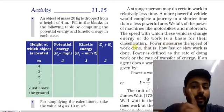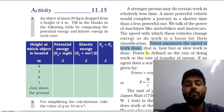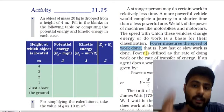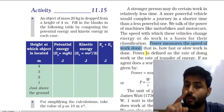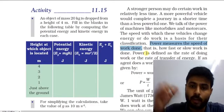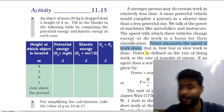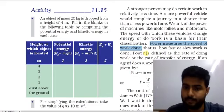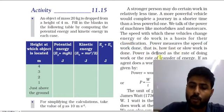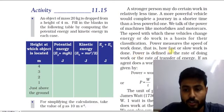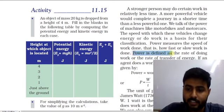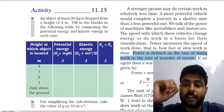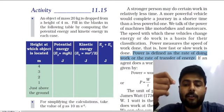Power measures the speed of work done. More the power, less the time to do the work. If I can do a particular work in less time compared to another person, I am more powerful in that work. Power is defined as the rate of doing work or the rate of transfer of energy.